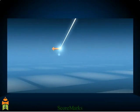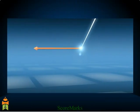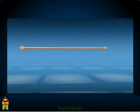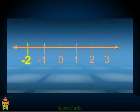In this topic, we shall learn how to find out rational numbers between two given rational numbers. Look at these integers. You can see that there are four integers between minus 2 and 3, but there is no integer between minus 1 and 0.